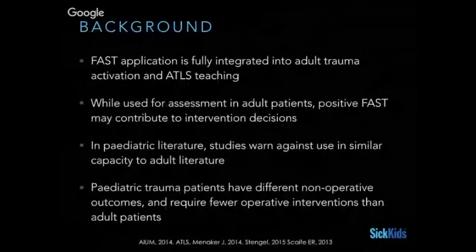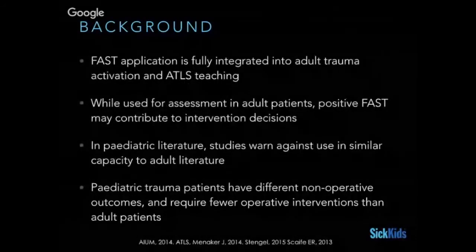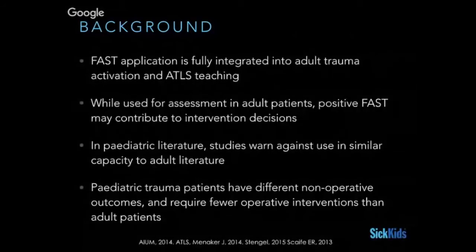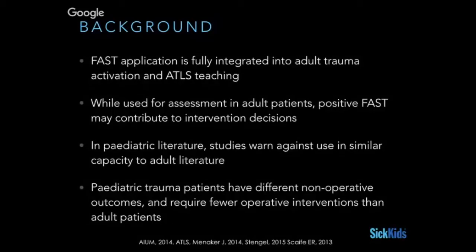The FAST application is fully integrated into the adult trauma activation and ATLS teaching — it's found within the primary survey as an adjuvant test. A positive FAST in adult patients may contribute to intervention decisions. The classic use has been in an unstable patient where a positive test leads to rapid progression to the OR instead of CT, though even in adults with angioembolization, that role is becoming a little less clear.